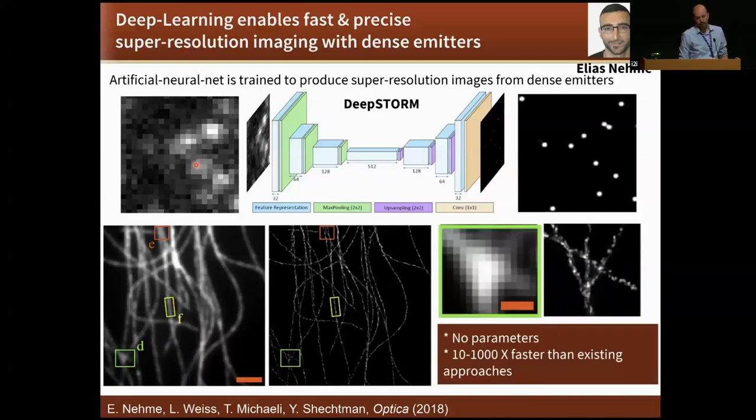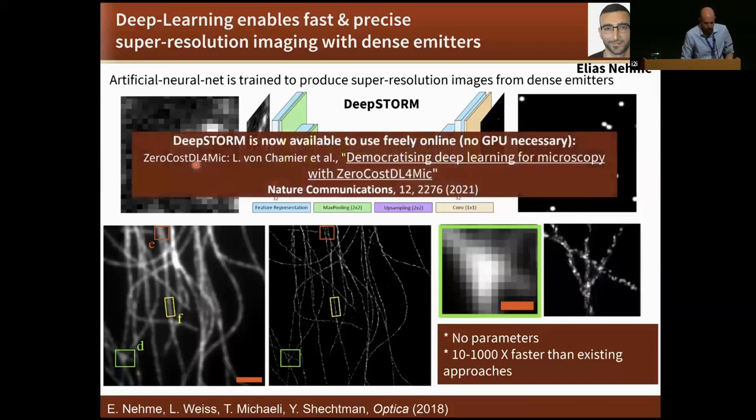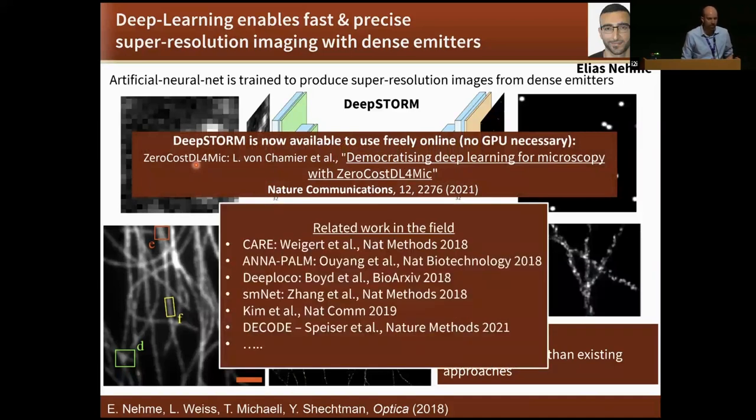So this works very well. These are just super resolution images. It's very fast because inference in these neural nets is extremely fast. This is available online. If anybody here is doing localization work, you can just use these tools online. You don't even need a GPU because this is all on Google.